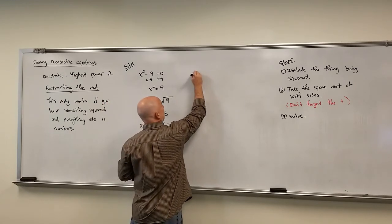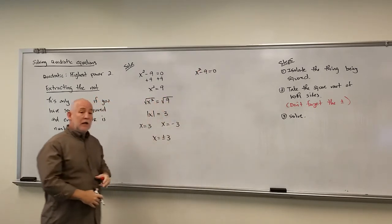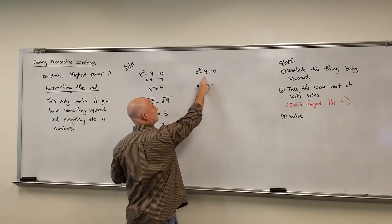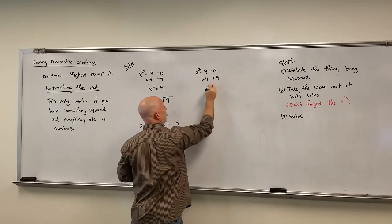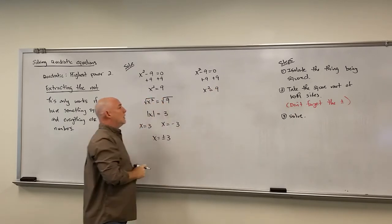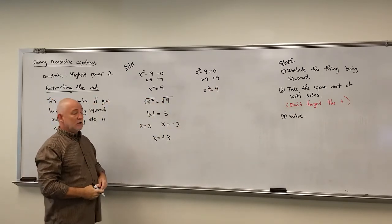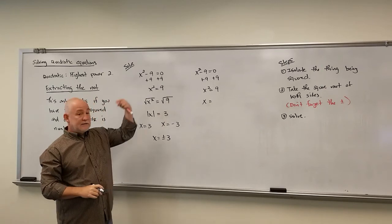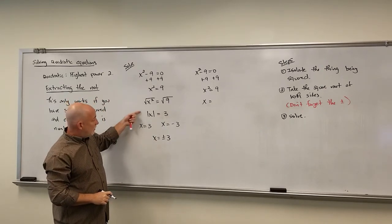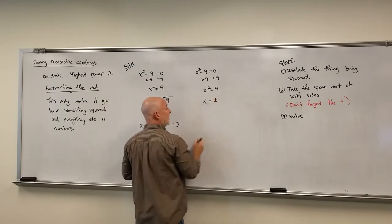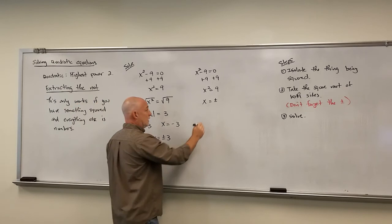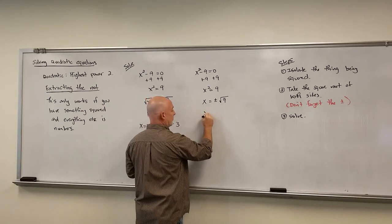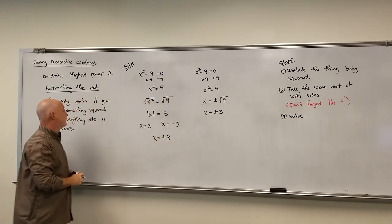Let's write the same problem the way we'll normally do it going forward. We can extract the root, so we follow our steps and get x² = 9. Taking the square root of both sides, the square root gets rid of the square, leaving just x. On the other side we write ±√9, and simplifying gives x = ±3.